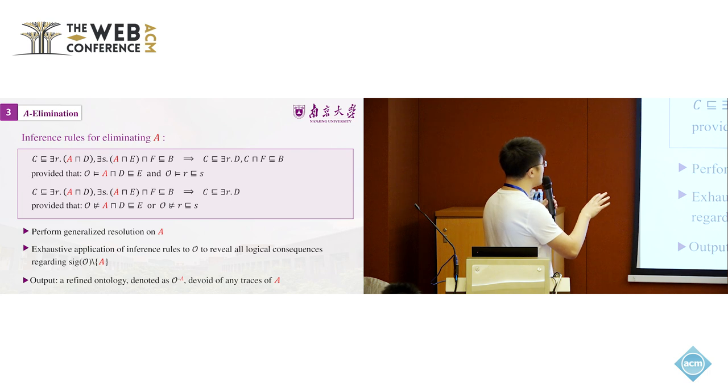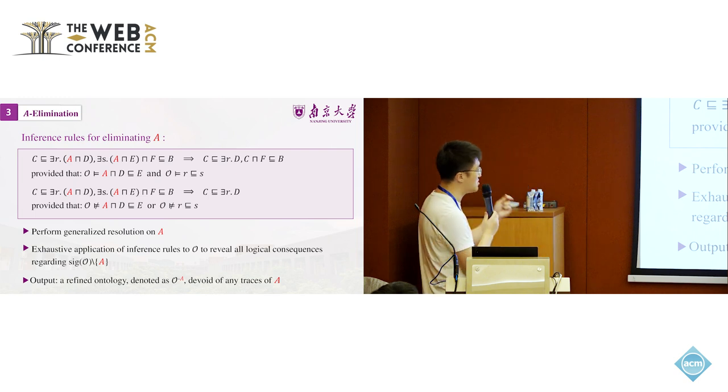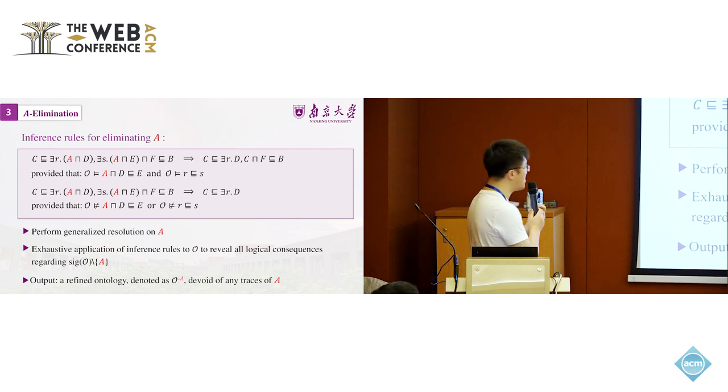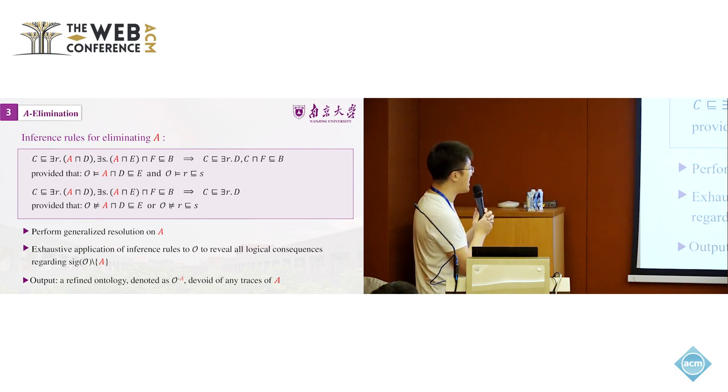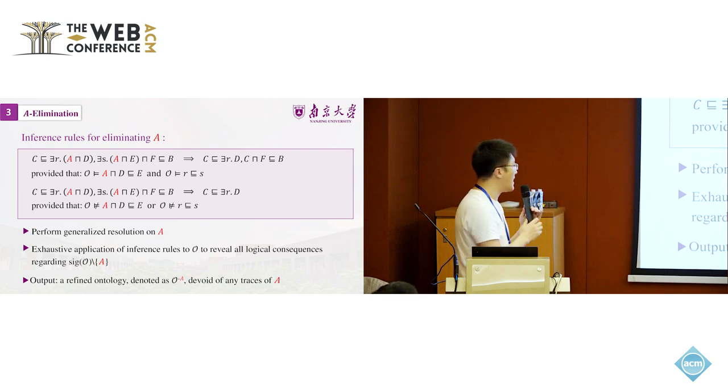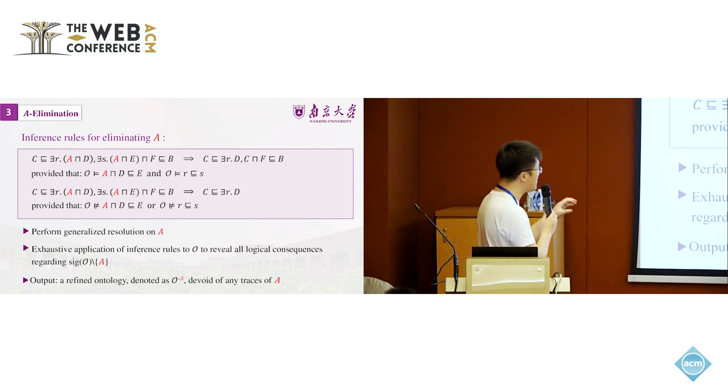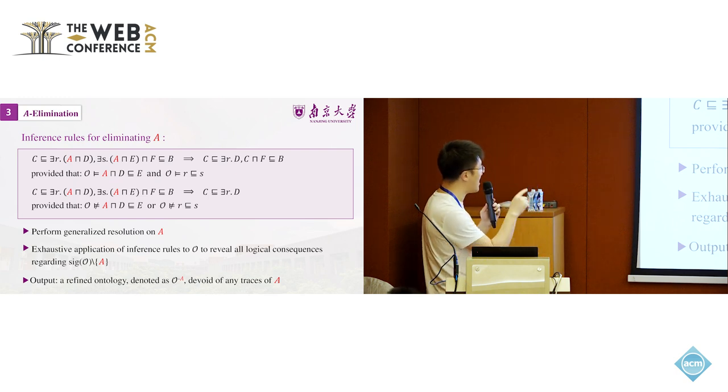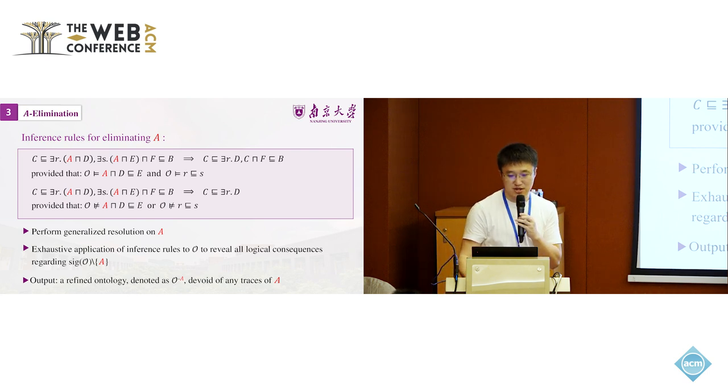These are the inference rules for eliminating A working on the normal form, which is very complicated. Technically, I don't want to go to very deep technical things of the rules. But if you're interested, you can come by my poster and we can discuss more. This is an example of showing how we eliminate A from axioms in this ontology, which is already in A normal form. After applying exhaustive application of the inference rules to O to review all logical consequences regarding those symbols, except for A. The output is a refined ontology, which is O minus A, which is devoid of any traces, any occurrences of A.